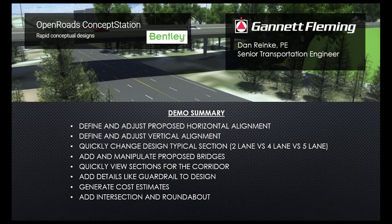To recap what we did in the demonstration: how to define and modify a horizontal and vertical alignment; how to easily change the roadway typical section; how to add and modify bridges; how to quickly display roadway cross sections; how to add details like guardrail to the design; how to generate conceptual cost estimates; and finally, how to define and modify intersections and roundabouts. There's more that can be done with this conceptual design tool that for the sake of time I didn't show. Hopefully this demonstration has shown you how we can quickly sort through any conceptual design ideas and explore the costs and impacts in an efficient and productive way. Thanks for your time.